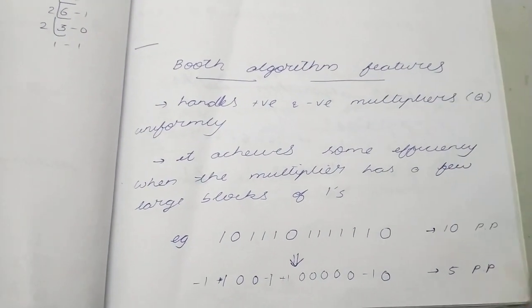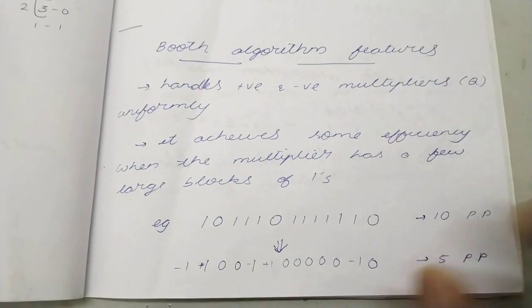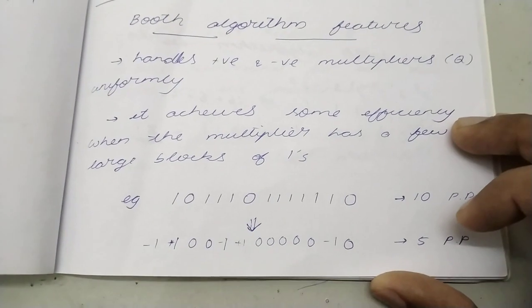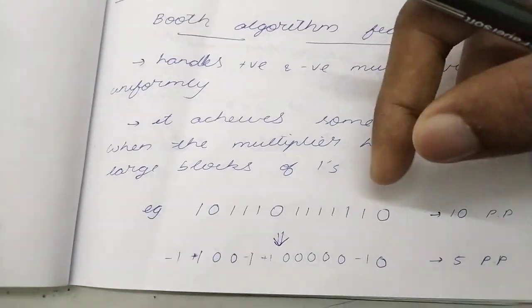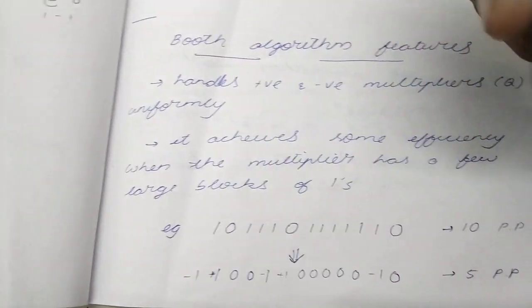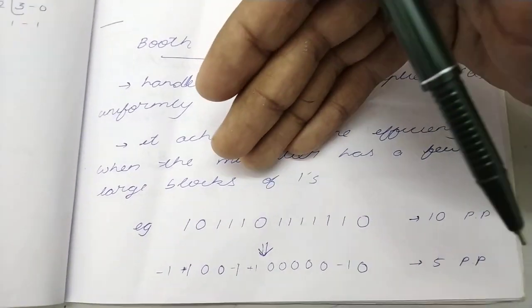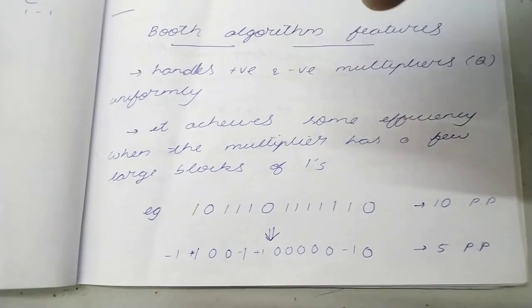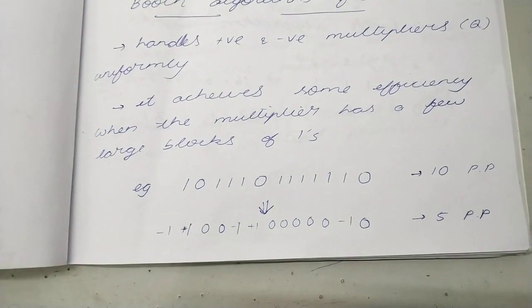The second feature is it achieves more efficiency when the multiplier has a few large blocks of 1's in it. What does that mean? Well, remember why we took this Booth algorithm? The very reason was that we needed less number of partial products. When do we have less partial products?